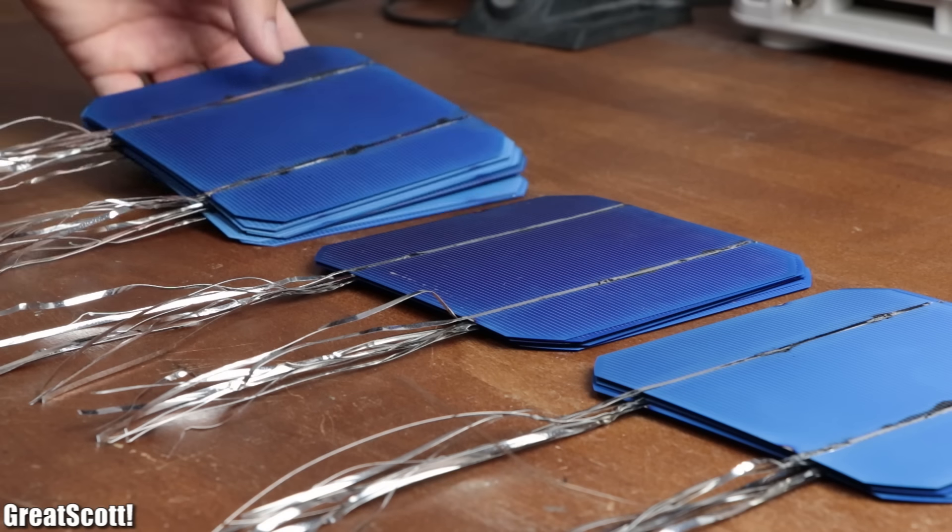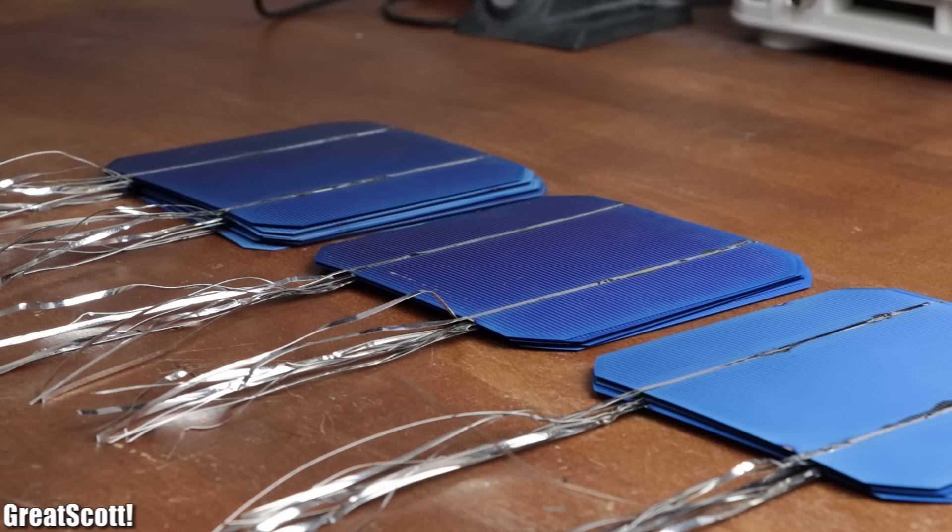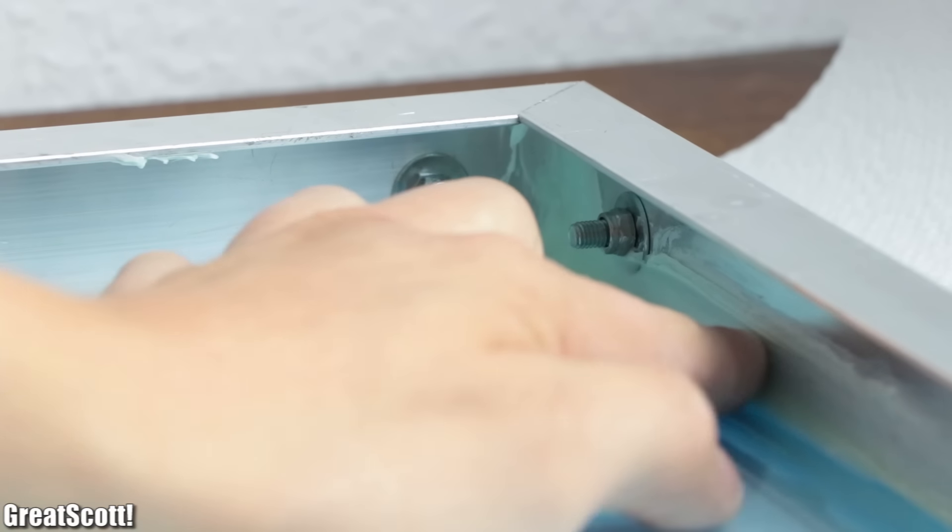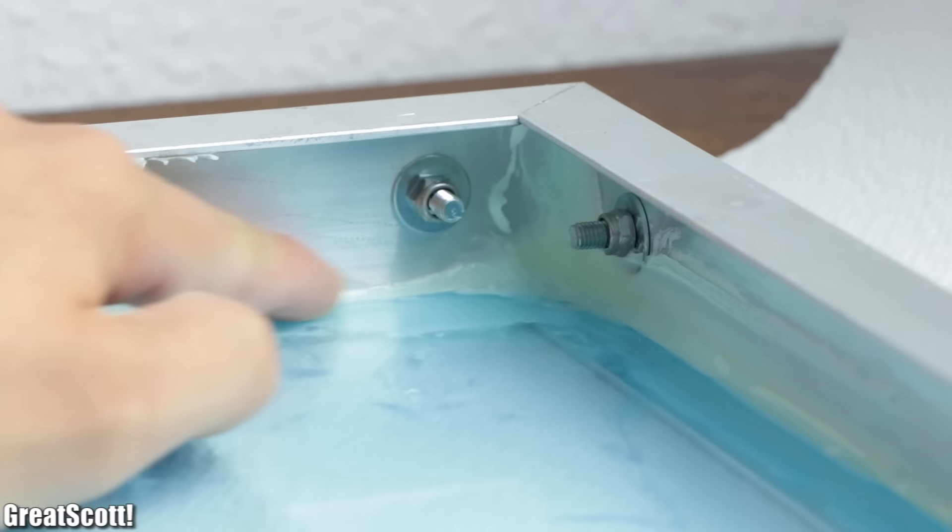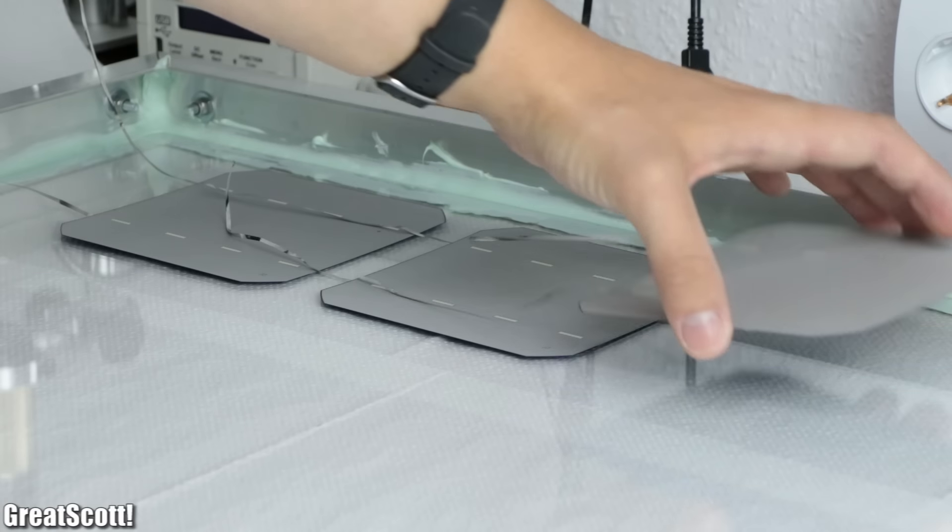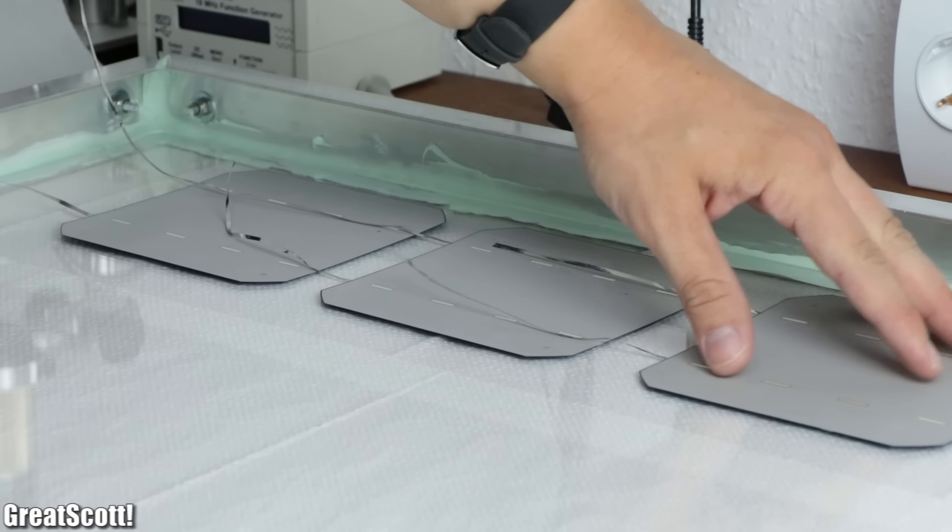And just like that you can get four piles with nine wired up solar cells each, which we will need for the frame whose adhesive should be dry by now. That means I removed the second protective film of the plexiglass and started placing the solar cells onto it.